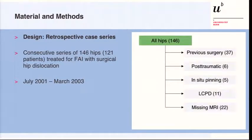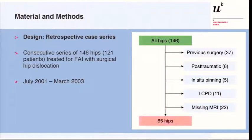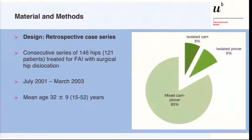From those hips, we excluded all hips with previous surgery, post-traumatic conditions, old SCFE, Legg-Calvé-Perthes disease, or missing/inappropriate MRI. We ended up with 65 hips with full documentation including all radiographs and follow-up. The age distribution was typical for impingement patients, as was the distribution of cam, pincer, and mixed-type deformities.